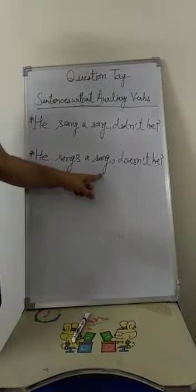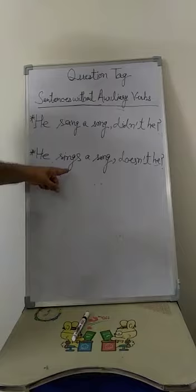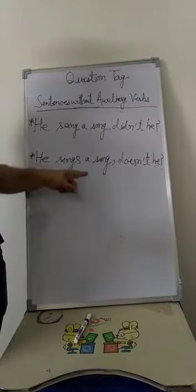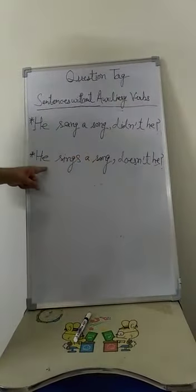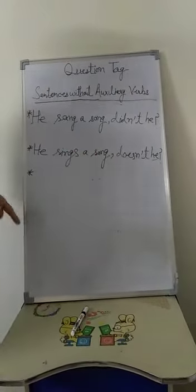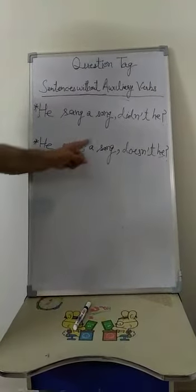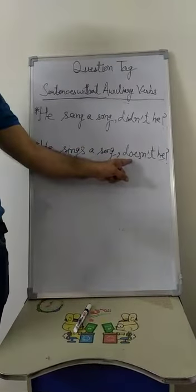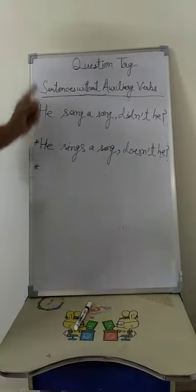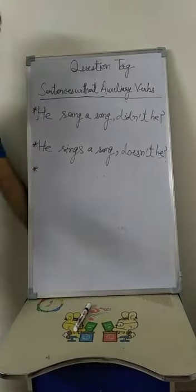He sings a song. So this is also an example where no helping verb or auxiliary verb is there. The first form of the verb has been used. So what shall we use? Doesn't he? Since it is a positive statement, question tag is in negative. So doesn't he? If the first form of the verb is used, we will use 'does' or 'do'. So 'does' has been used because of 'he'. Along with 'he', we use 'does'. So these were two examples of sentences without auxiliary verbs.